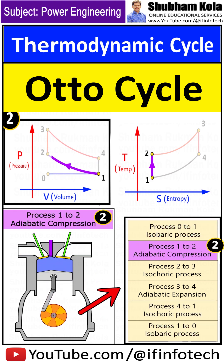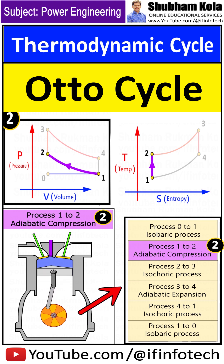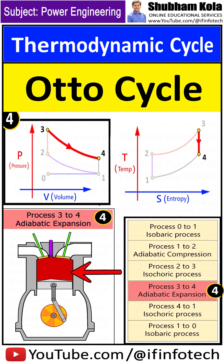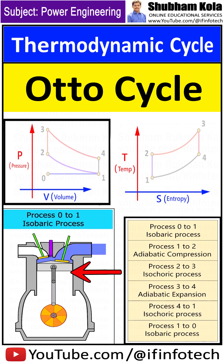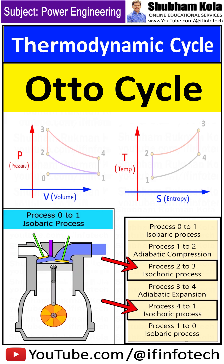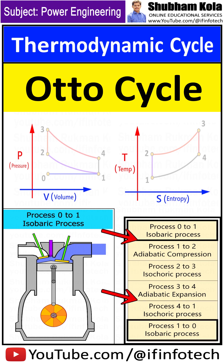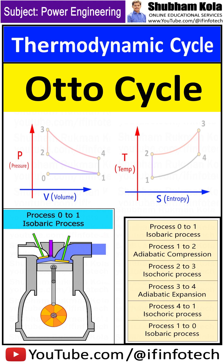The following processes occur during each step on the PV diagram, in which combustion of the working fluid — gasoline and air — changes the motion of the piston. The Otto cycle consists of two isochoric, two adiabatic, and two isobaric processes for intake and exhaust. Let's discuss all the thermodynamic processes one by one.